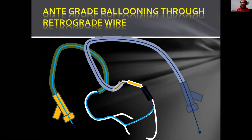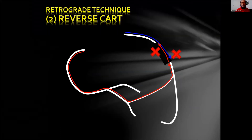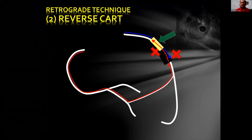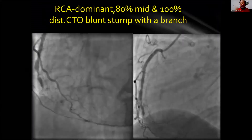For wire crossing options: you hit the CTO from the back by retrograde CTO wire after crossing the collateral channel, cross the CTO body, get into the proximal true lumen, then externalize the wire through the antegrade guide catheter, put antegrade balloon over the retrograde wire, and then place the stent. The very popular reverse CART technique is used when you can't get into the proximal true lumen by retrograde wire — you take an antegrade wire, dilate over it to increase the subintimal space, then redirect the retrograde wire to that larger space and get into proximal true lumen.